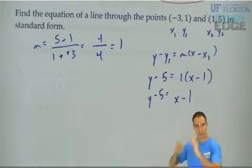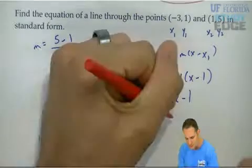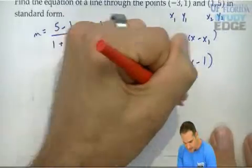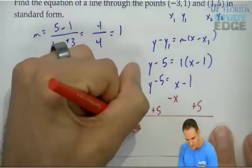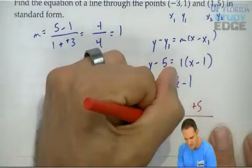From here, move your variables to one side, your numbers to the other. I'm going to subtract the x to the left, and at the same time, add the 5 to the right. So I'll get negative x plus y, negative 1 plus 5 equals 4.